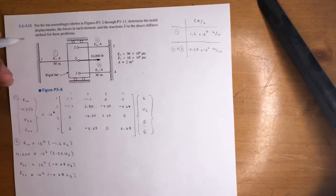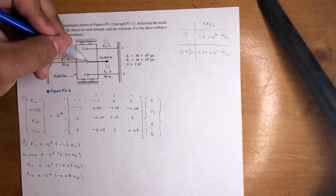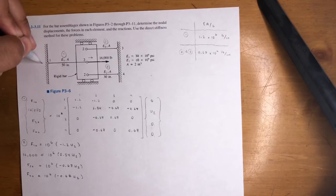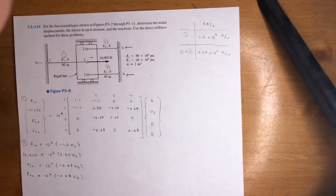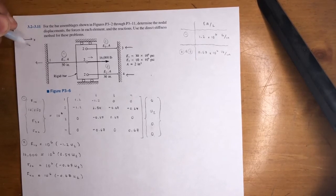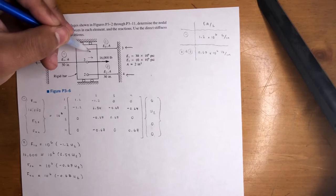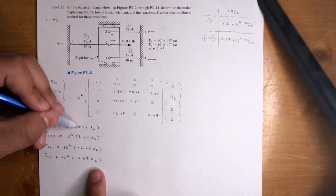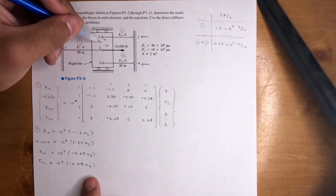Before we continue, let's look at the system for a second. At node 2 we are pulling to the right at 16,000 pounds. That means element 1 is going to get stretched, wanting to return to its original spot. Elements 2 and 3 are going to get compressed, pushing back. So I can already tell that those reaction forces will be negative, since we're assuming positive x is to the right. And U2 — pushed this way with 16,000 — is going to move in the positive direction.